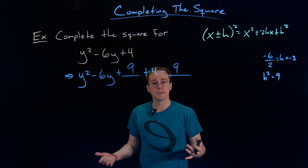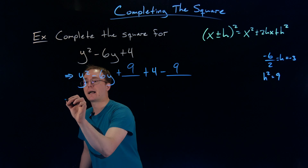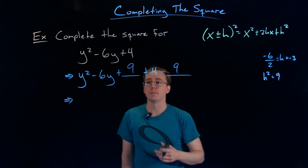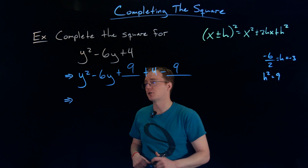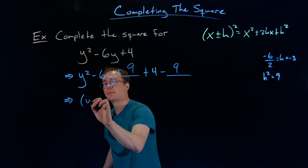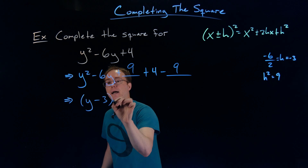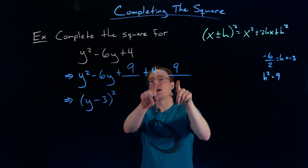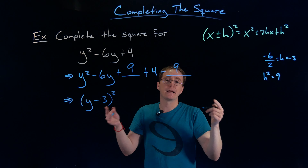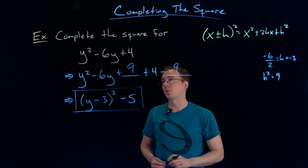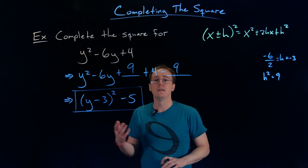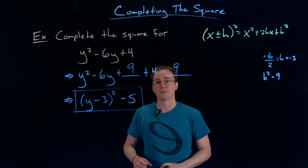So we're not done yet — we've just done that preliminary setup, but now we're ready to actually do our factoring to complete the square. These first three terms are now guaranteed to be a perfect square trinomial, and we should be able to see that they will factor as y minus 3 squared. Then the constant terms at the end we just combine and copy down — 4 minus 9 is negative 5. So that would be our final answer. That is our original expression, y squared minus 6y plus 4, factored via the process of completing the square.